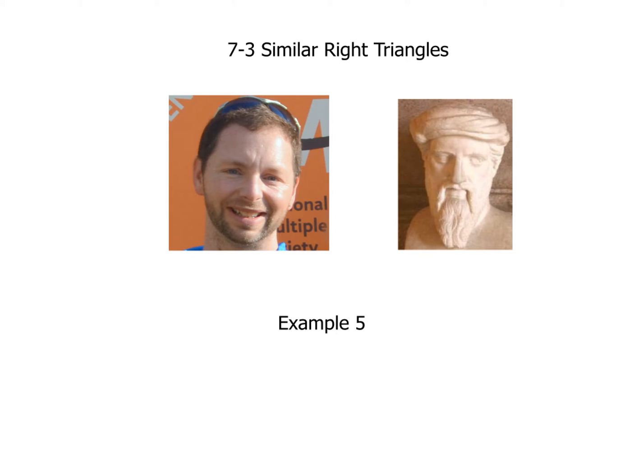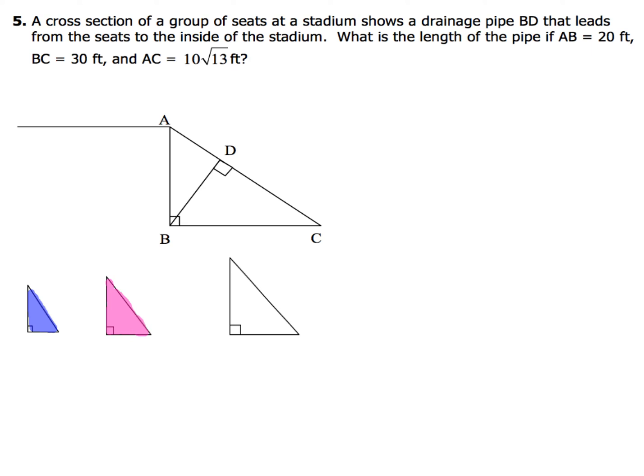Let's get right into this problem. Now for this, we've got a cross-section of a group of seats at a stadium that shows a drainage pipe BD that leads from the seats to the inside of the stadium. What's the length of the pipe if AB is 20 feet, BC is 30 feet, and AC is 10 square root of 13 feet?